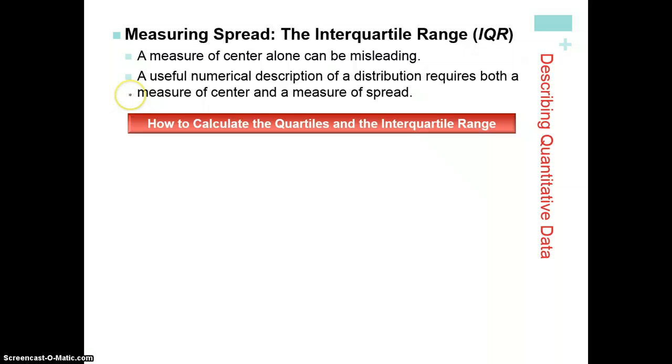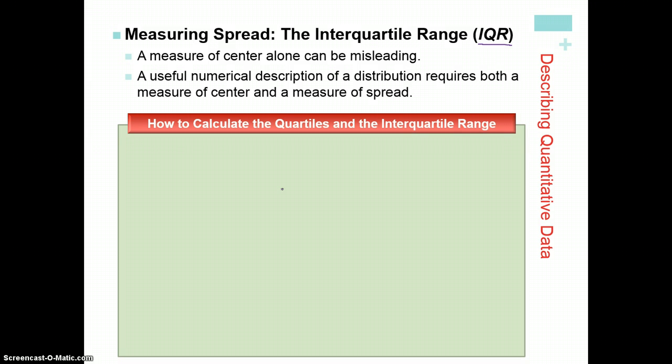So now we're getting into measures of spread, numerical measures of spread. This is the interquartile range IQR. The measure of center alone can be misleading, especially if you do have a skewed distribution. So a useful numerical description of a distribution requires both a measure of center and spread. The median is actually a quartile. It's our second quartile.